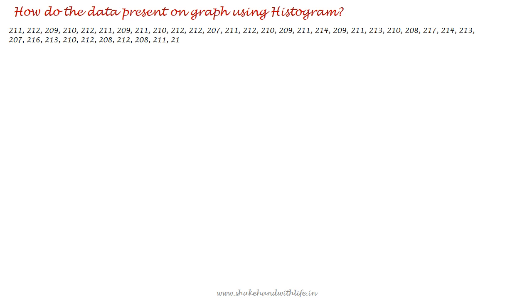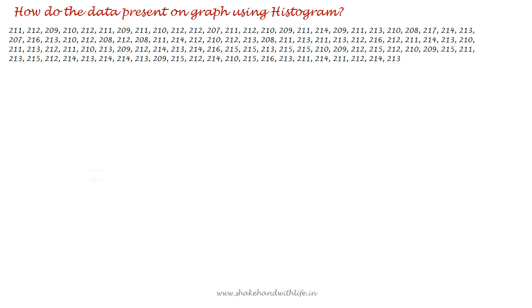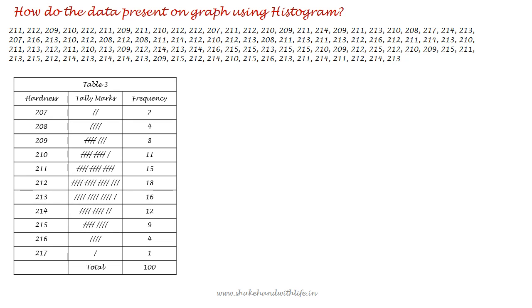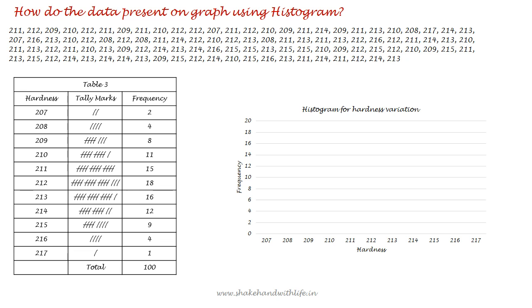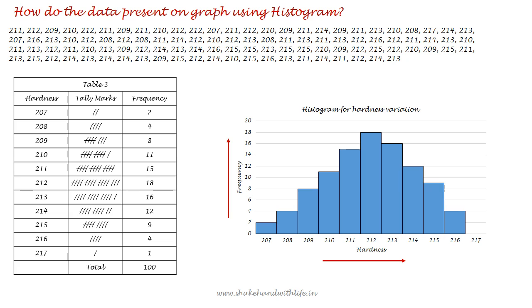How is data presented on a graph using a histogram? Here, 100 observations of hardness variation for a particular product are shown. Table 3 shows the frequency of every individual hardness value counted with the help of tally marks. To draw the histogram, take individual values on the x-axis and frequencies on the y-axis, then draw vertical bars corresponding to the frequency of each hardness value. The number of vertical bars showcases the spread of the data, the variation in bar heights shows the process variation, and the shape of the histogram elaborates the distribution of the data. Here it shows the data has symmetrical distribution.